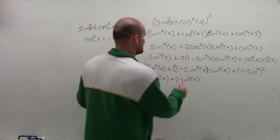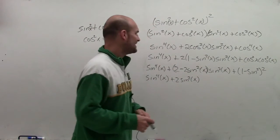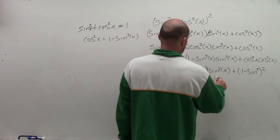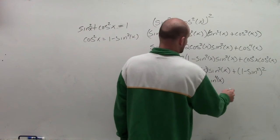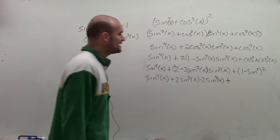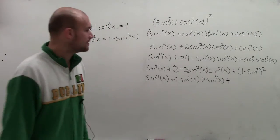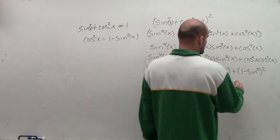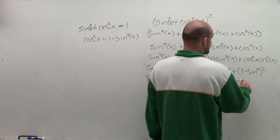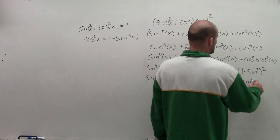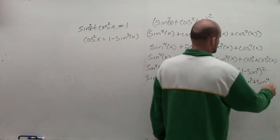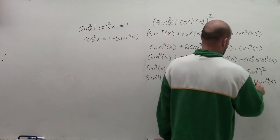And then here is going to be a negative 2. I guess I forgot to put the s. Negative 2 sine to the fourth of x plus 1 minus sine squared squared. So again, I can use my perfect square trinomial, which is going to represent 1 squared minus 2 sine squared plus sine to the fourth of x.